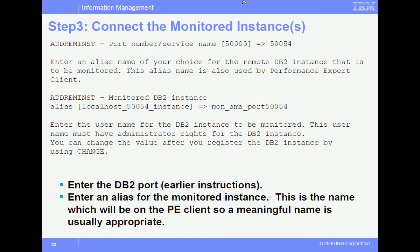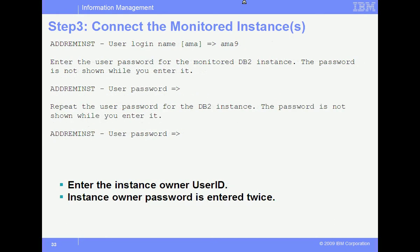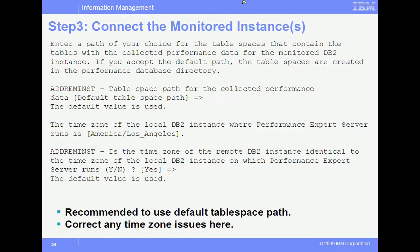Next, enter the DB2 admin user ID and password for the monitored instance on the monitored server. You'll be prompted for the password twice. You need to specify a tablespace path on the PE server for collecting performance data. It is recommended that you use the default. At this point, you will also be prompted for the time zone for the monitored instance.